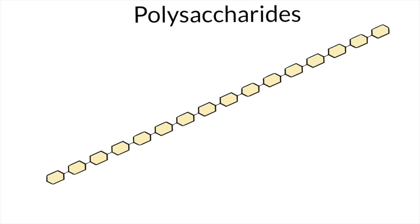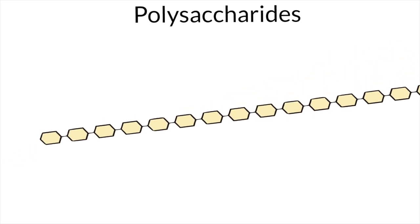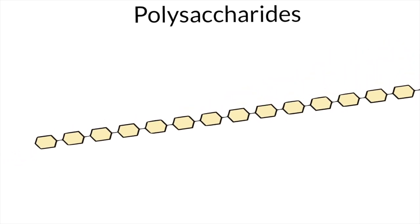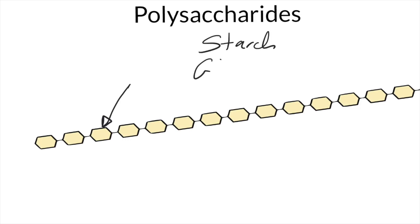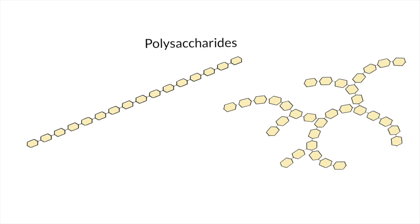Polysaccharides are polymers of glucose. In all polysaccharides, glucose molecules are attached to each other by glycosidic bonds — the same bond we have seen in disaccharides. Each one of those hexagons represents one glucose molecule. One good example of polysaccharides is starch, which is found in plants. There is also glycogen, which is found in animals. We will first start with starch.